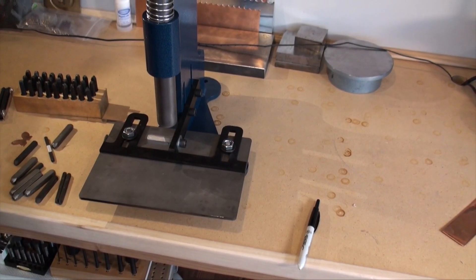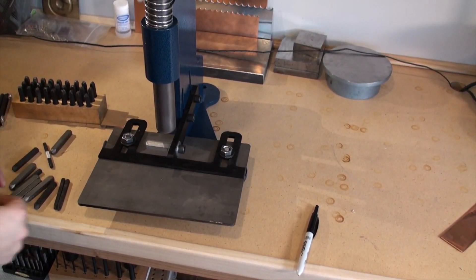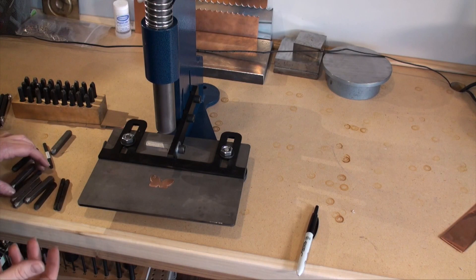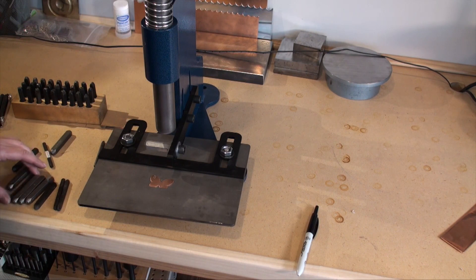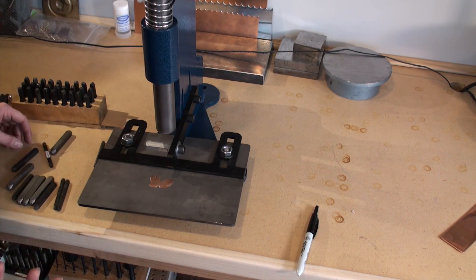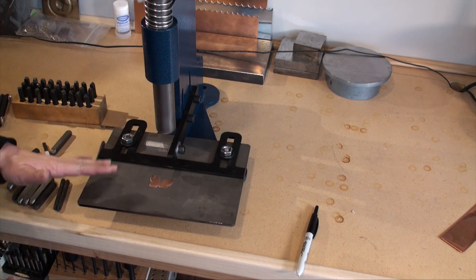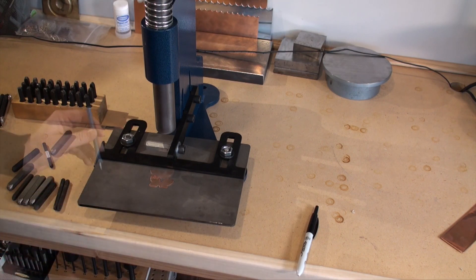So I have a number of different tools and punches and things like that that I use. One of the things I like to use even my hydraulic press for is for flaring rivets or knocking rivets into things, and this will also allow you to do that.